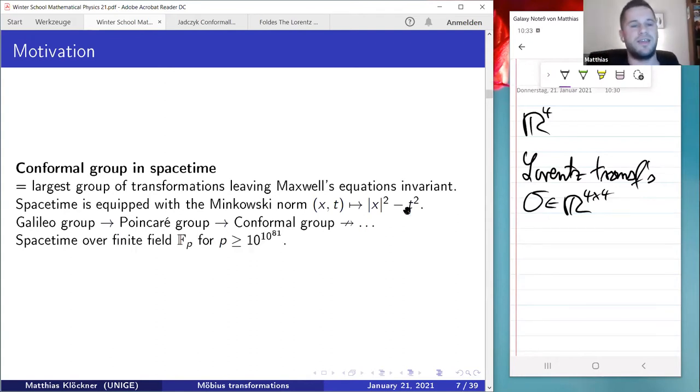One more thing. There are no theoretical objections to why the underlying field of space-time should be the real numbers. It is possible that our universe has a finite field underlying, but the order is estimated to at least 10 to the 10 to the power 81. There is serious research—there's a paper by Stefan Foldus from 2008, which approximates the ordinary Lorentz transformations by their finite analogues. I have not seen a paper discussing the bigger conformal group in this space-time over finite fields. I think it's a natural thing to also consider this.